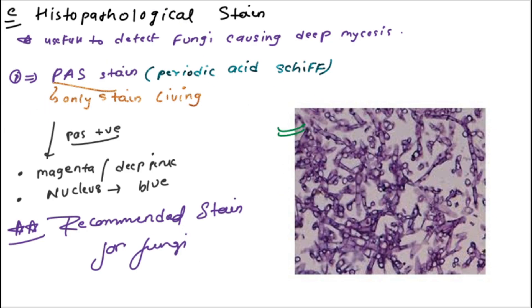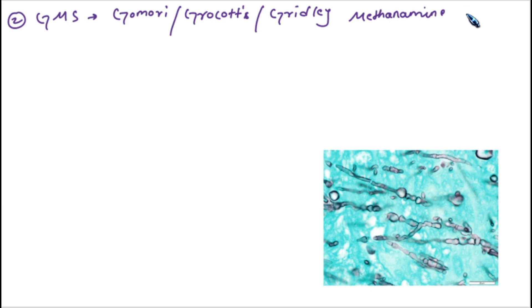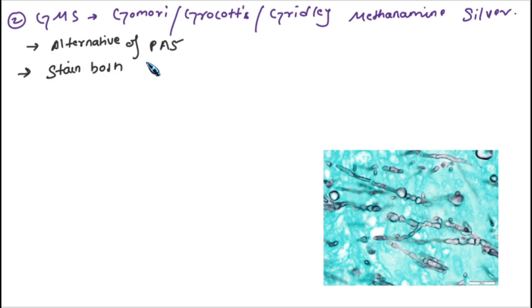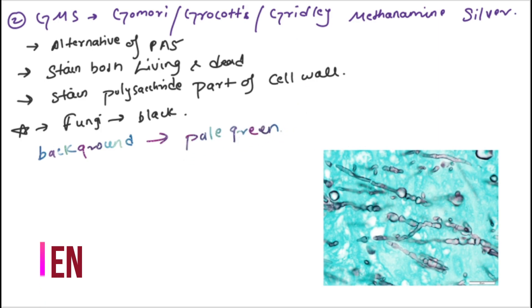The second histopathological stain is Gridley Methenamine Silver, also called Gomori Grocott stain. It is an alternative to PAS stain. This stain stains the polysaccharide part of the cell wall. A key benefit is that it can stain both living and dead fungi. The fungi appear black and the background is pale yellow.